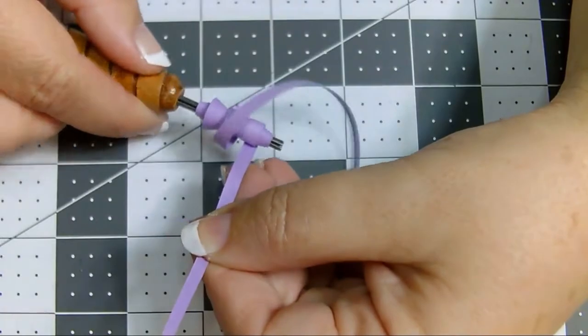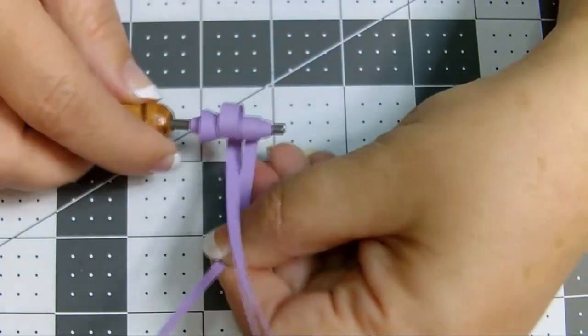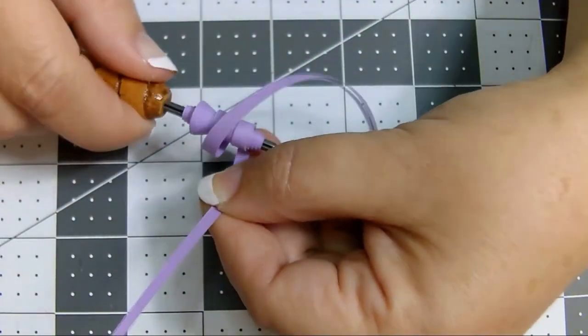Now I'm going to do the other side the same way. Line it up straight on the outside and tapering in from the middle.